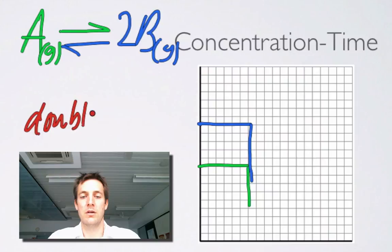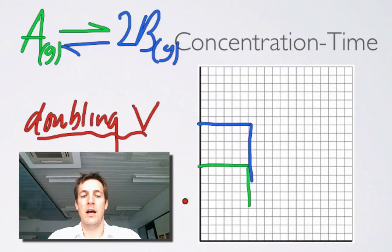Doubling the volume, which is just an example. And now the forward reaction is being favored. So the concentration of B is going to rise. It mustn't rise past its original value.